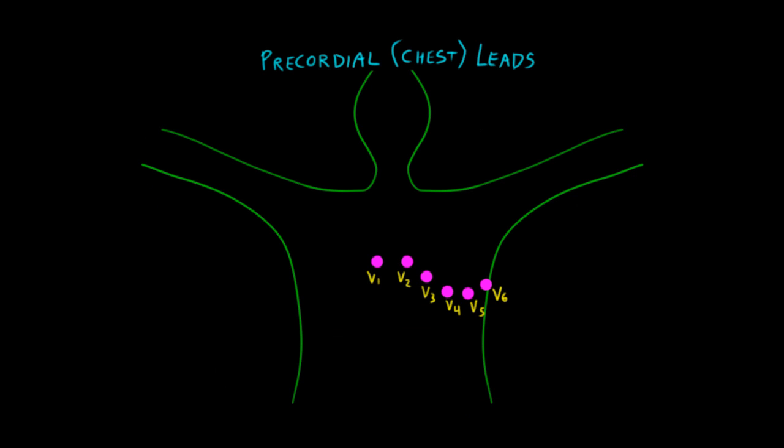Now let's look at our precordial leads, or our chest leads. The precordial leads V1 through V6 allow us to look at the electrical activity of the heart in the anteroposterior plane. V1 and V2 are located on either side of the sternal edge at the 4th intercostal space. V4 is located at the 5th interspace along the mid-clavicular line. V6 is located horizontally in line with V4, but along the mid-axillary line.